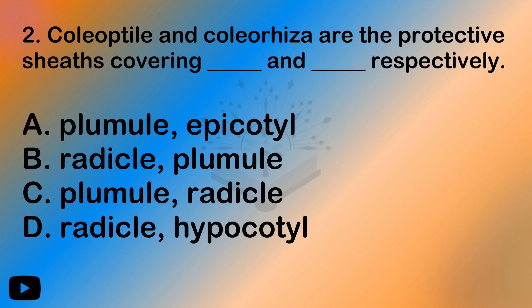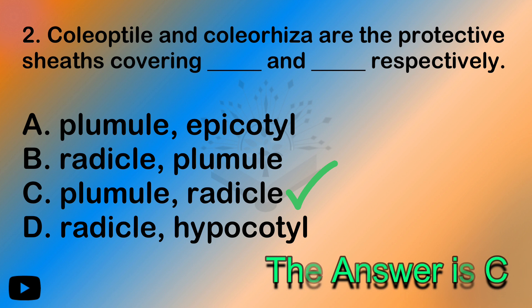So the answer here is: take a look at the order — radicle, plumule. Coleoptile comes in, then plumule comes in. The option is plumule. That is the answer.